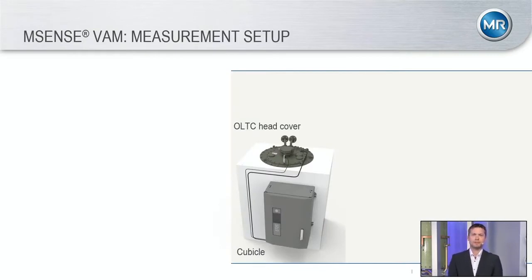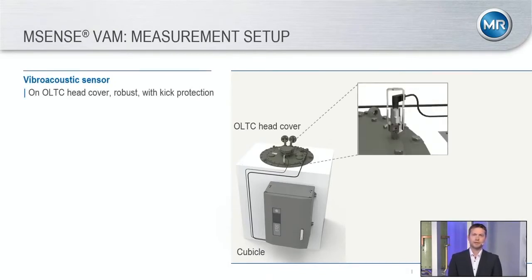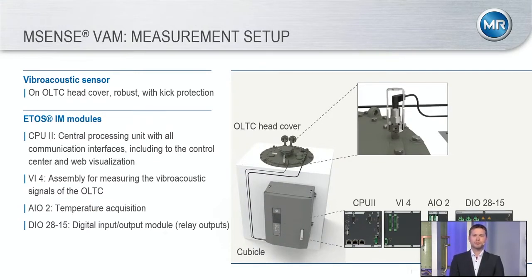The installation of the mSense VAM is very easy. By removing a bolt from the head cover, the mSense VAM sensor can be installed on the head cover. It is a stainless steel holder for the sensor, very robust for temperatures and environmental influences. The connection from the sensor to the motor drive unit or to the Ethos is done with one cable, connected to a special measurement card — we call it the VI4 card, which is especially developed for these vibroacoustic signals. The CPU is normally already there with the Ethos, so there is no need to install a second CPU card; the existing CPU card can be used.